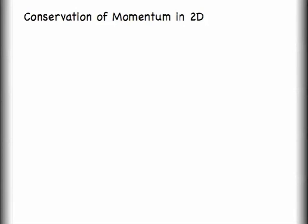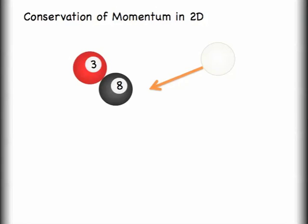That was a fairly straightforward example of conservation of momentum in one dimension. Of course, we can have conservation of momentum in two dimensions or even three. I'll show a very common example of conservation of momentum in two dimensions — billiard balls. I'm showing three of them in this example. We're going to say only the cue ball is moving initially, so it's the only thing that's going to start with any momentum. We're also going to say that there's no friction in this entire problem, otherwise we've introduced an outside force and would need to re-evaluate our closed system approximation.